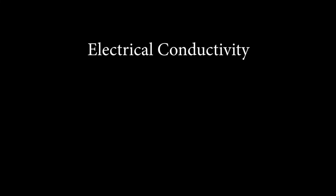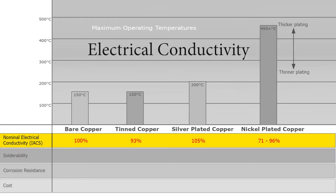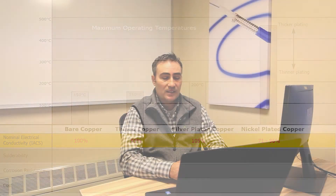Our second characteristic is electrical conductivity. The percentages are based on IACS, or International Annealed Copper Standard. Where absolute lowest resistance is a key factor, consider silver plating or bare copper. Both tin and nickel elements have lower conductivity, so when plated over copper, the overall conductor conductivity is lower. Note that nickel plated copper with a higher nickel plating thickness will have lower conductivity.